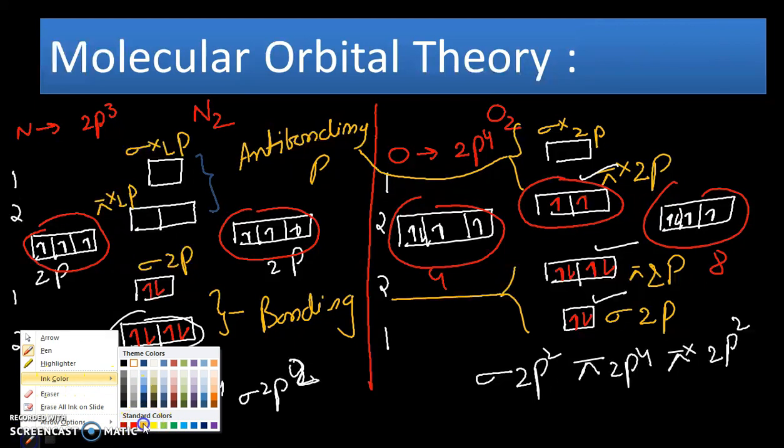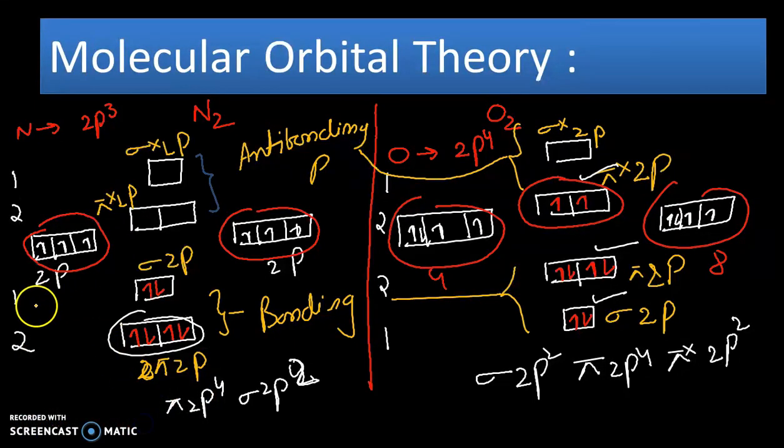There is a formula for bond order: number of electrons in bonding orbitals minus anti-bonding, divided by two. In case of nitrogen, there are six electrons in bonding orbitals and no electrons in anti-bonding orbitals, so it is six minus zero by two, which equals three. So three is the bond order for nitrogen molecules.